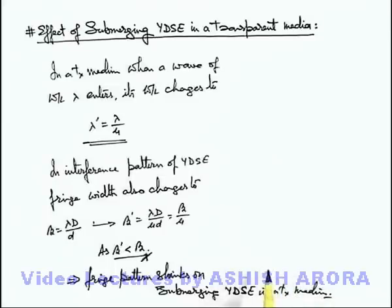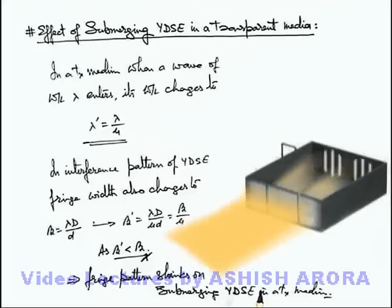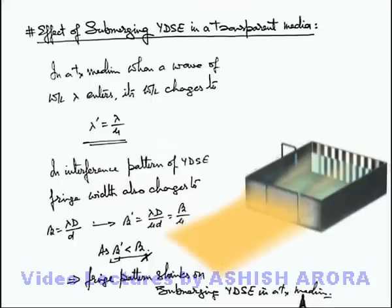Here you can see the realistic situation to understand the phenomenon. This setup shows a YDSE experiment performed on yellow light, and here you can see the fringe pattern where the fringe width is beta. When we start filling up water in the YDSE setup, in the region where light waves pass through water, the wavelength changes to lambda by mu, and correspondingly the fringe width also decreases to beta by mu. On screen you can see that the fringe pattern is shrunken.